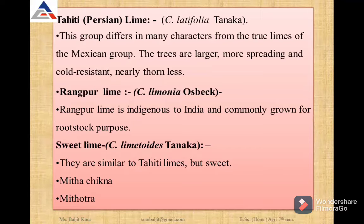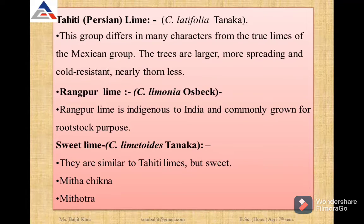The other lime is Tahiti lime, with the scientific name Citrus latifolia (Tanaka). This group differs in many features from the true limes — the trees are larger, more spreading, cold resistant, and nearly thornless. Rangpur lime (Citrus limonia) is indigenous to India and commonly grown for rootstock purposes. Sweet lime (Citrus limettioides, Tanaka) is similar to Tahiti lime but sweet, with varieties Mitha Chikna and Mithotra.